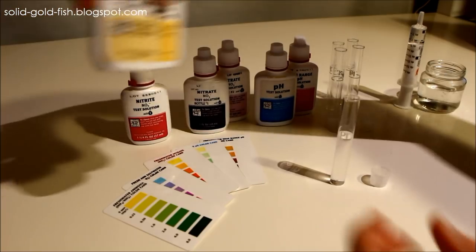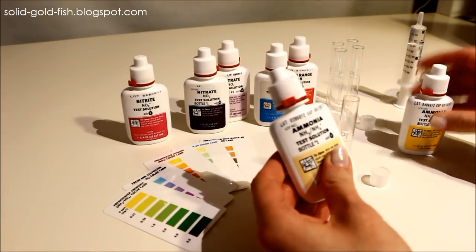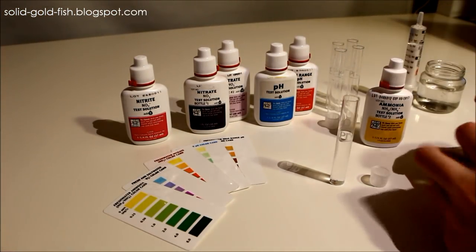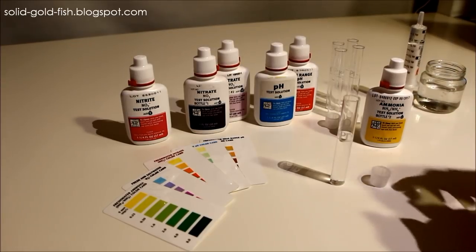The ammonia test has two bottles. You use bottle one first and then bottle two, and you add eight drops of each one.